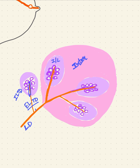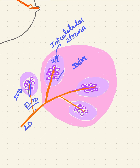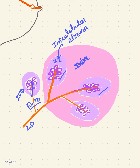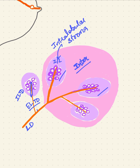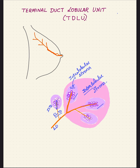Extralobular and intralobular terminal ducts. Another component is the stroma. The stroma present within the lobule is called intralobular stroma. There is also stroma present in between the two lobules, called interlobular stroma. So this terminal duct with the acini and lobule forms one terminal duct lobular unit.